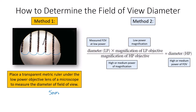If we wanted to calculate the field of view for a medium or high power objective using method two, we use this equation: take the measured field of view at low power — in this case five millimeters — multiply that by the low power magnification, whether it's 4x, 10x, or 2x, and divide by the high power objective magnification, whether 40x or 100x. That gives us the diameter of the higher power field of view.